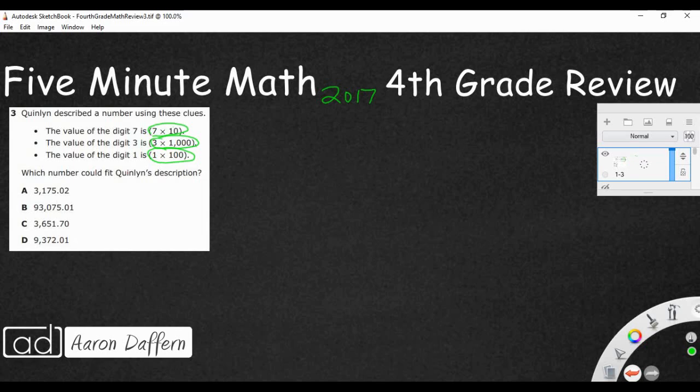We're trying to find the number that could fit, and I see that every single answer goes to the hundredths place. So let's go ahead and get that right here. So that's my tenths, that's my hundredths. 3 of the 4 go to the thousands. This B goes to the ten thousands. So I'll just go up to the ten thousands. So that's ones, tens, hundreds, thousands. So let's fill in the information they give us.